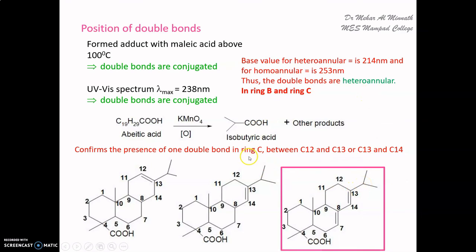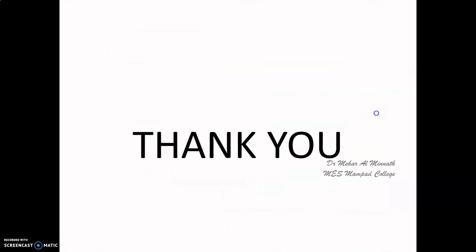Thus the structure of abietic acid has been established: a methyl group on carbon 4, a tertiary carboxyl group on carbon 4, an angular methyl group on carbon 10, an isopropyl group on carbon 13, and conjugated heteroannular double bonds between C13–C14 and C7–C8. Please write out the structures and reactions and practice to make yourself thorough.